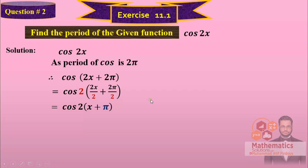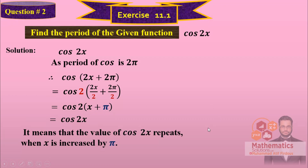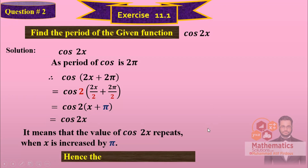So the period of cos(2x) is pi. It means that the value of cos(2x) repeats when x is increased by pi. This is the answer: the period of cos(2x) is pi.